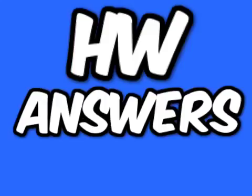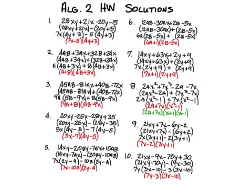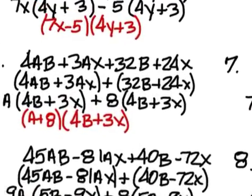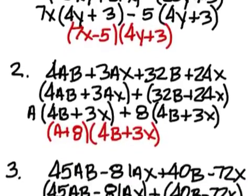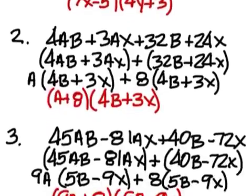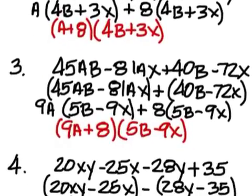Here are the homework answers. For number one it should be 7X minus 5 and 4Y plus 3. Number two is A plus 8 and 4B plus 3X. Three is 9A plus 8 and 5B minus 9X.